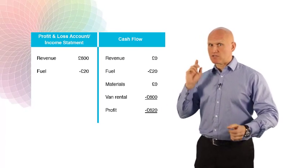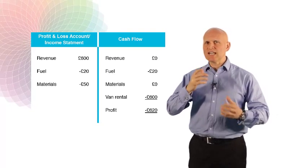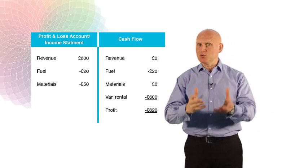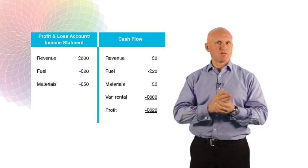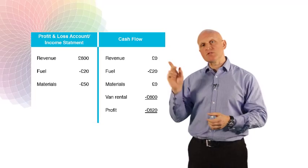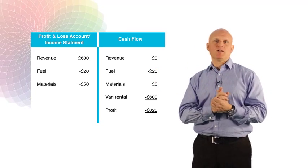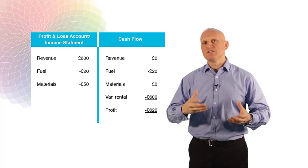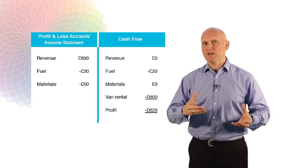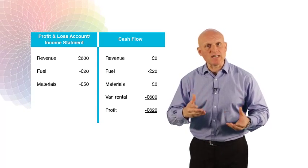Next we move on to the materials now. With the materials, he didn't actually pay for the materials in January, but he did use them. So he used that £50 worth of materials, and he actually had a bill from the supplier, from the wholesaler. So the accountant, as you'll see, puts that £50 in, because we used the materials in January.